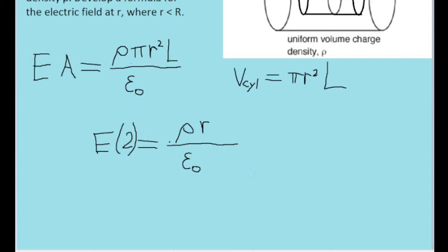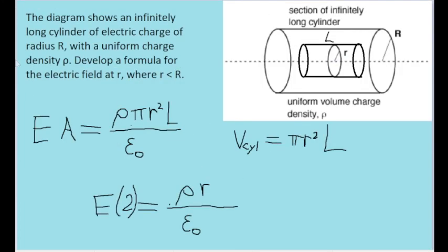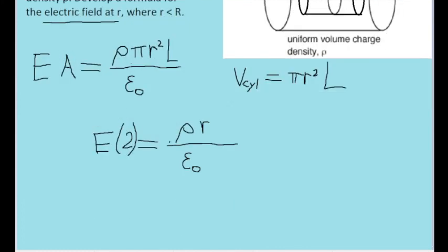Since our ultimate goal from the beginning was to get a formula for the electric field at the radius small r, we just need to isolate this E variable. We can do that by dividing both sides of this equation by 2. Now the final formula says that the electric field at that radial distance is equal to the charge density times the radial distance divided by 2 times the permittivity constant.